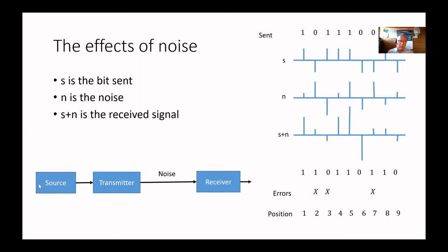We have a source that sends signals. It's transmitted, we have some noise, and it's received. S is the bits that we send, N is the noise that is added, and S plus N is the received signal. When you send a one, you send it as a positive pulse. When you're sending a zero, you're sending a negative pulse. Then you have two positive pulses, then a negative pulse, a negative pulse, a positive, and a negative. And then you have some noise added.